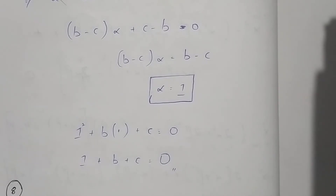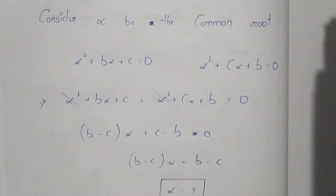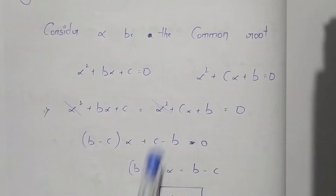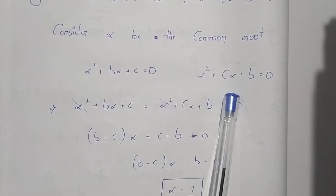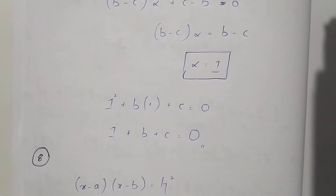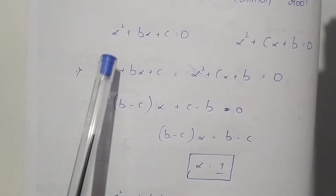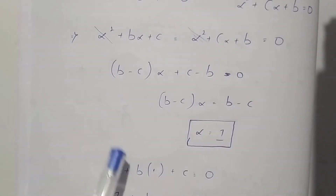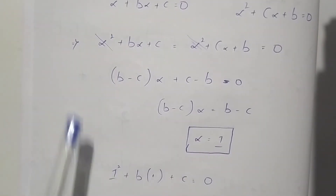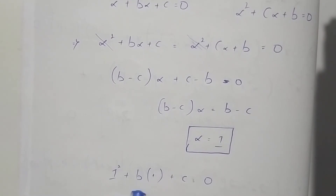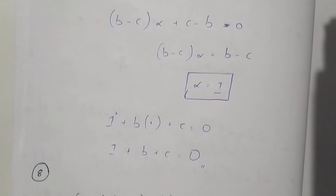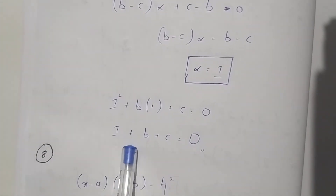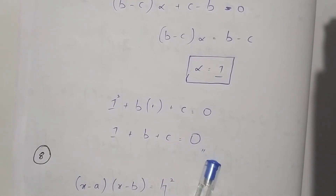Therefore the common root of these two equations is 1. On substituting alpha equals 1 into the first equation, we get 1 squared plus b times 1 plus c equals 0, which gives us the final answer: 1 plus b plus c equals 0.